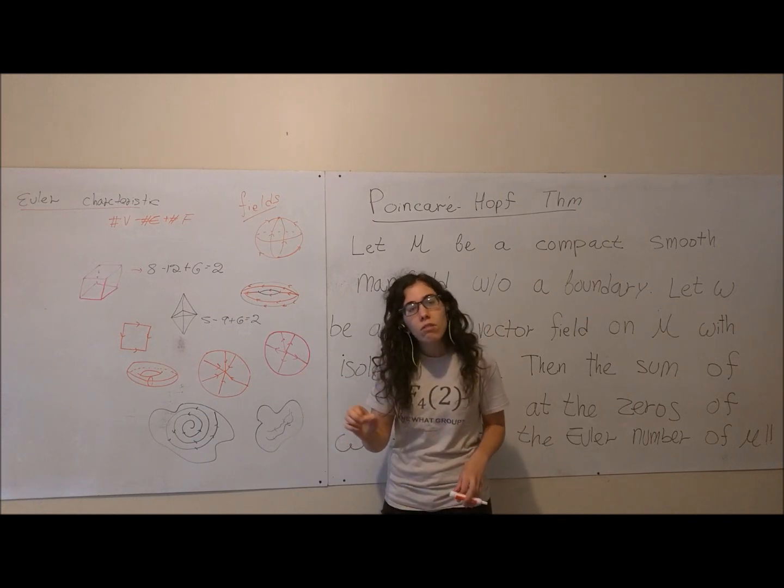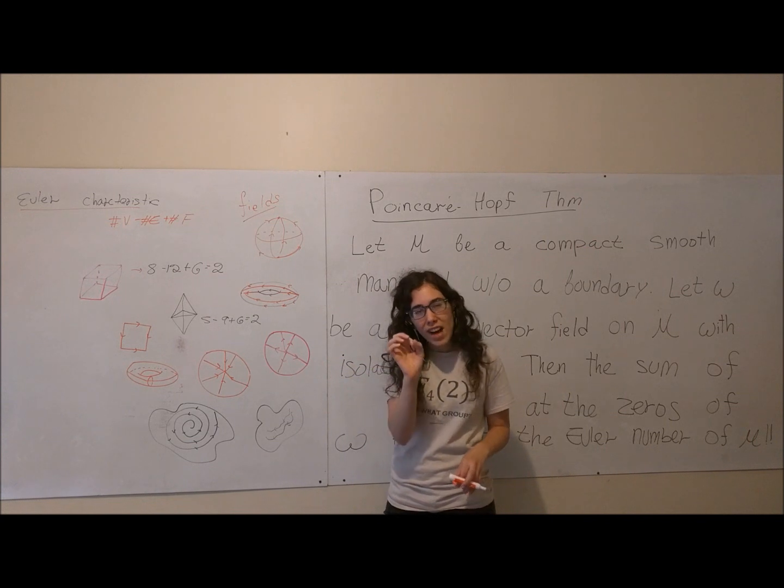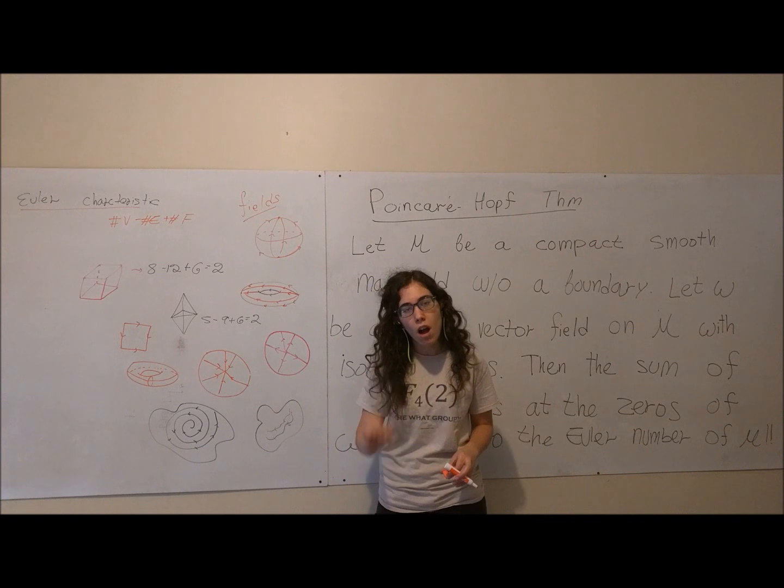What we demand is that the zeros of the vector fields are isolated, which means that you can find a small tiny neighborhood around this zero in which there are no other zeros.